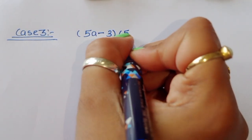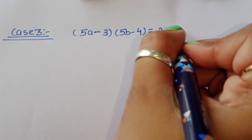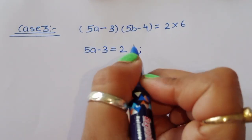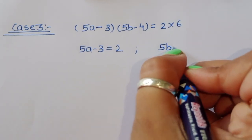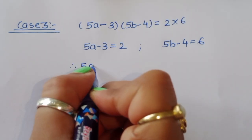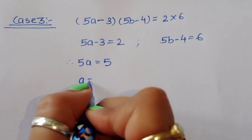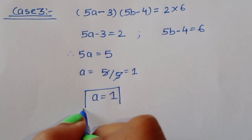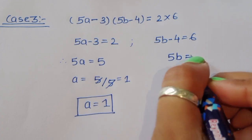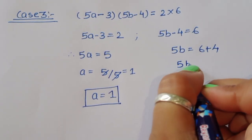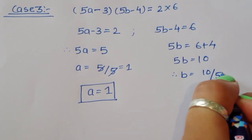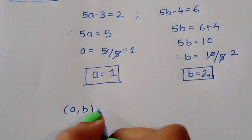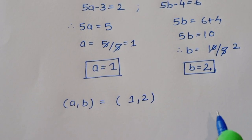Case 3: (5a-3)(5b-4) = 2×6. So 5a-3=2 gives 5a=5, therefore a=1. And 5b-4=6 gives 5b=10, therefore b=2. Both are integers, so Case 3 gives a=1 and b=2.